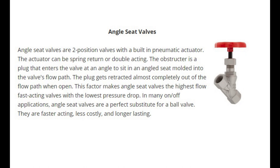Angle seat valves are two-position valves with a built-in pneumatic actuator. The actuator can be spring return or double acting. The obstructor is a plug that enters the valve at an angle to sit in an angled seat molded into the valve's flow path. The plug retracts almost completely out of the flow path when open, making angle seat valves the highest-flow, fast-acting valves with the lowest pressure drop. In many on/off applications, angle seat valves are a perfect substitute for a ball valve — they are faster acting, less costly, and longer lasting.